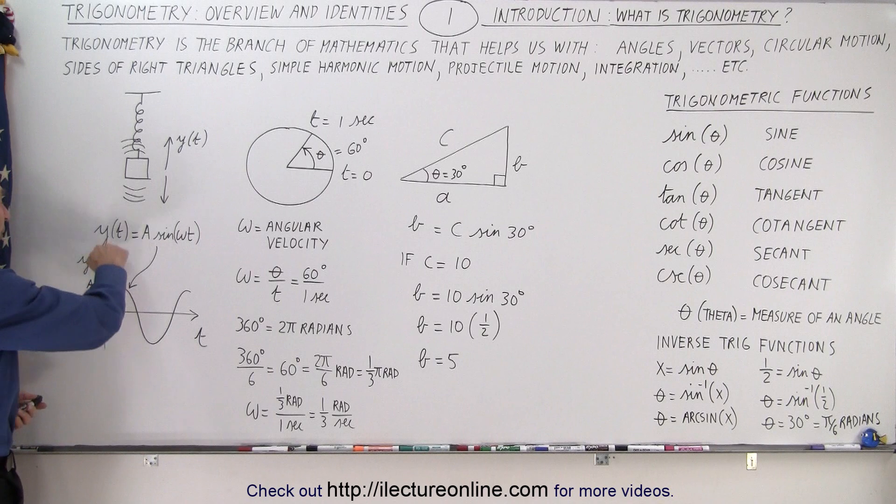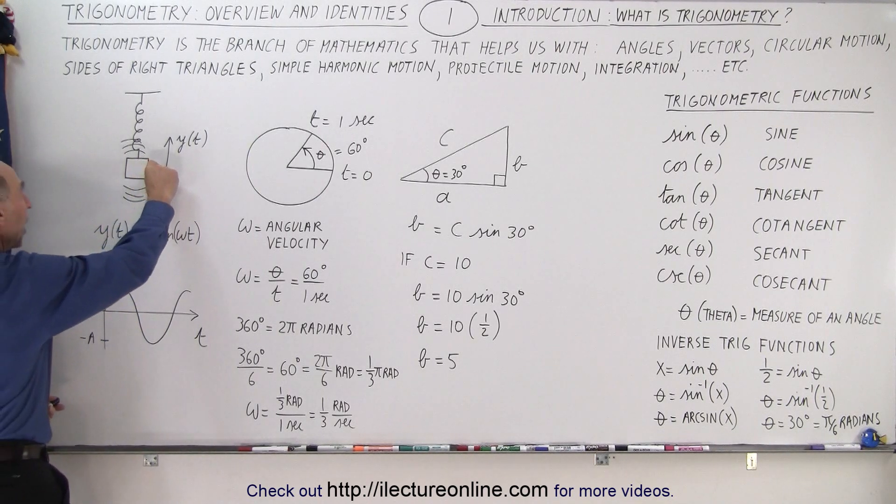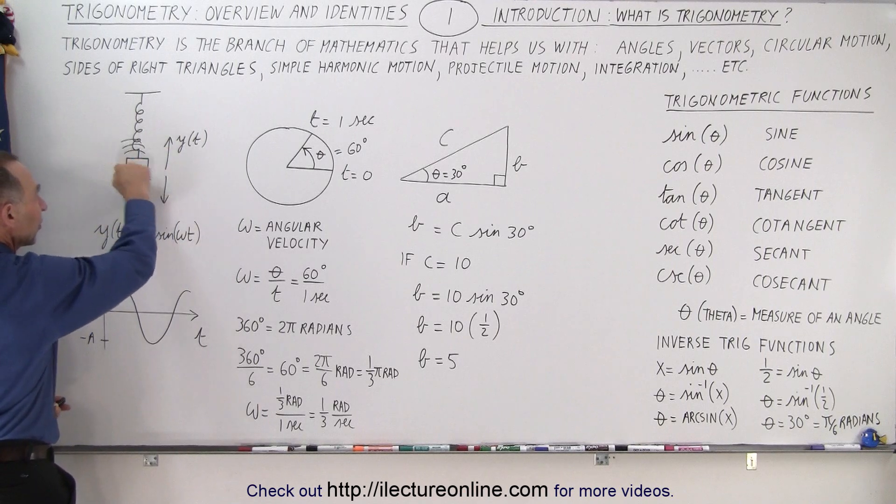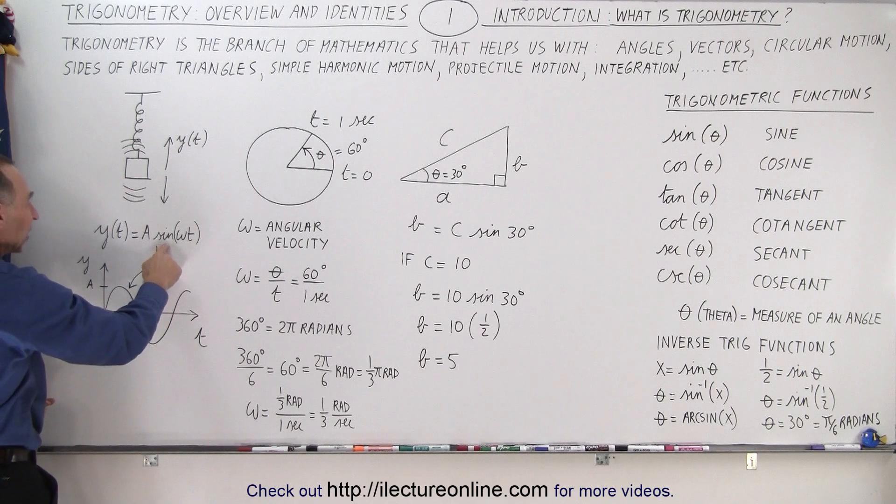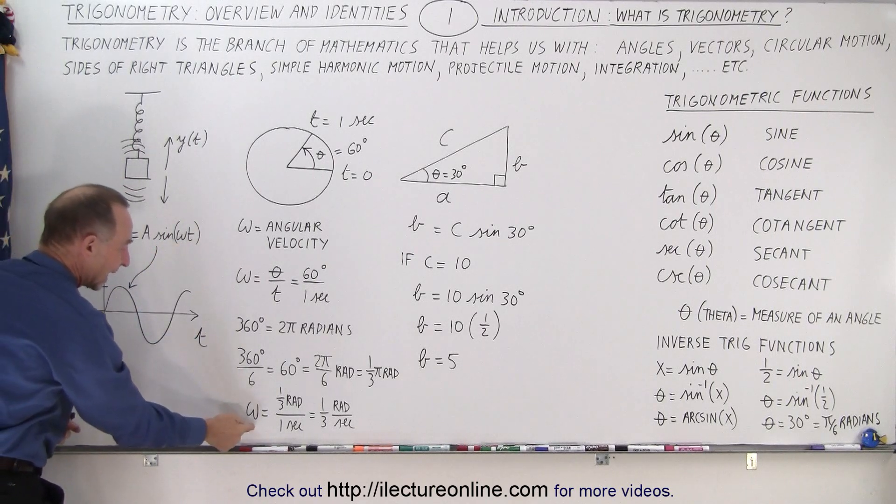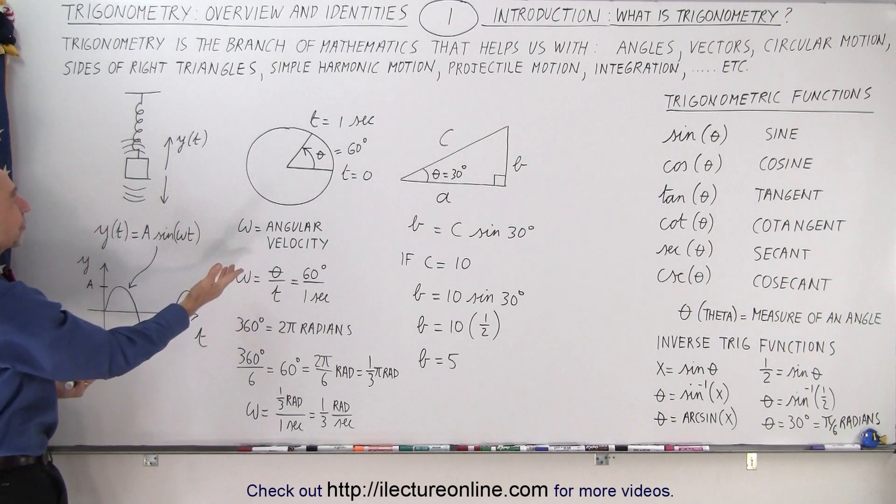We can say that the position of where it's at is going to depend upon how much it can deviate from its central position, A—that's the maximum amplitude of the motion—times the sine of ωt. Omega is the angular velocity, and t stands for time.